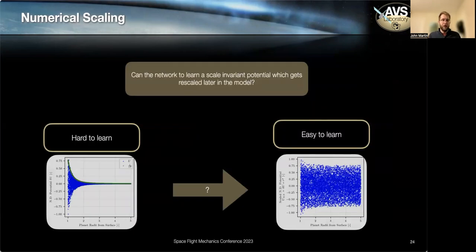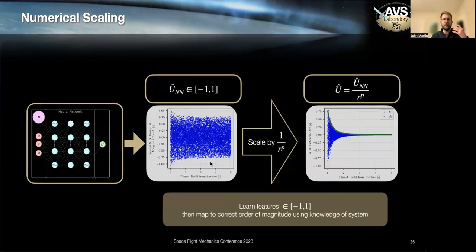So how do we fix this? Is there any way we could actually learn a distribution that was a little bit more numerically well-conditioned, so we can later in the model take this distribution and compress it into the correct order of magnitude for that altitude?